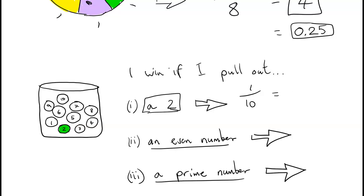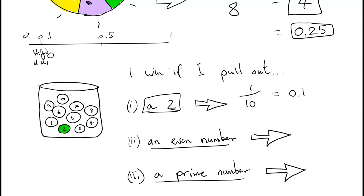On the probability scale, 1 over 10 as a decimal is 0.1 — way down near 0, in the highly unlikely category. And common sense confirms this: there are a lot more balls that lose it for me than win it for me.